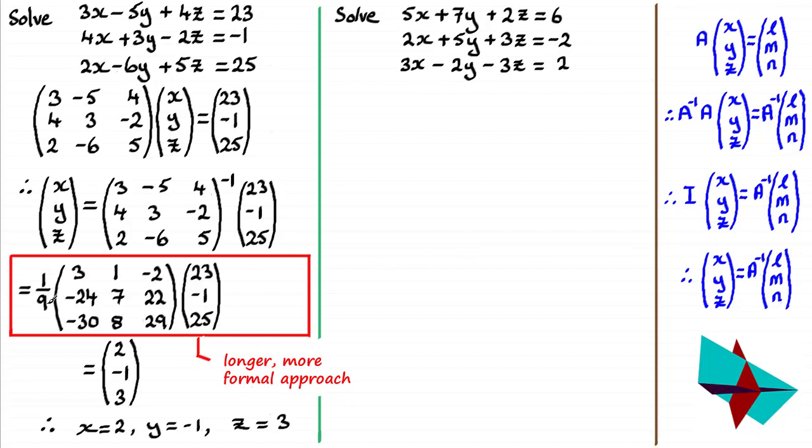But what you would get is this. It's 1 over the determinant, which turns out to be 9. And then when you work out the cofactors of this matrix and then do the adjoint of it, you'll end up with what we have here. And as you can see, we multiply that then with our column matrix here, 23, -1, 25. And then if you multiply these two matrices together, you'll get this result.